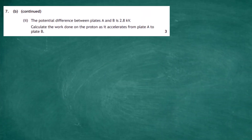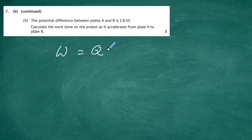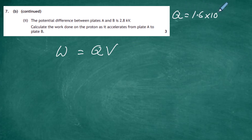Question 7, part b, part 2. The potential difference between plates A and B is 2.8 kilovolts, and we have to calculate the work done on the proton as it accelerates from plate A to plate B. The electric field does the work on the proton, and the work done W is always equal to the charge q of the charged particle times the potential difference it passes through. The charge on a proton is +1.6×10⁻¹⁹ coulombs.